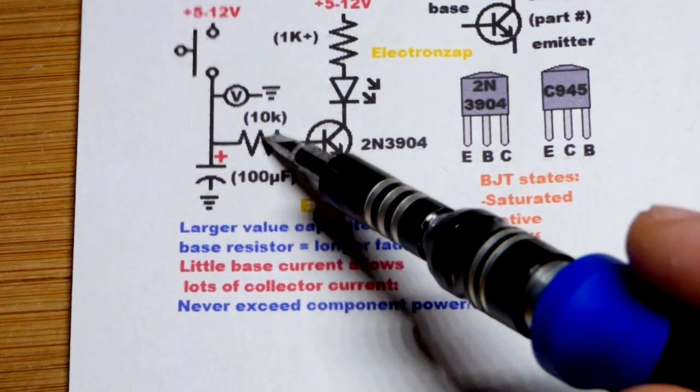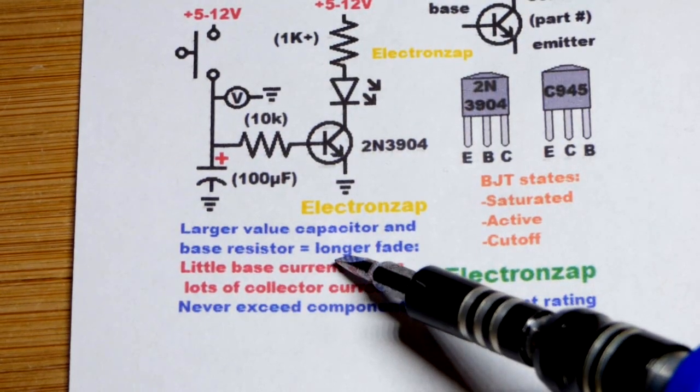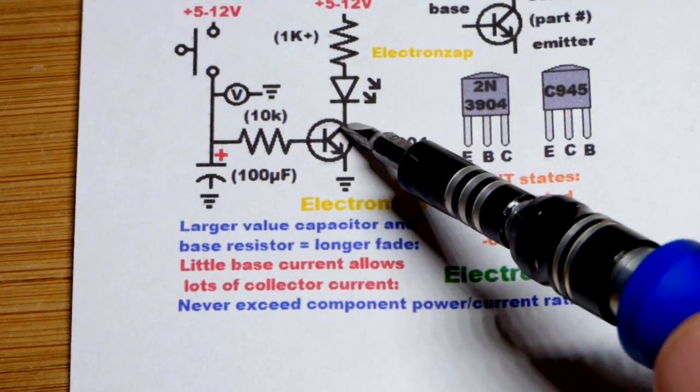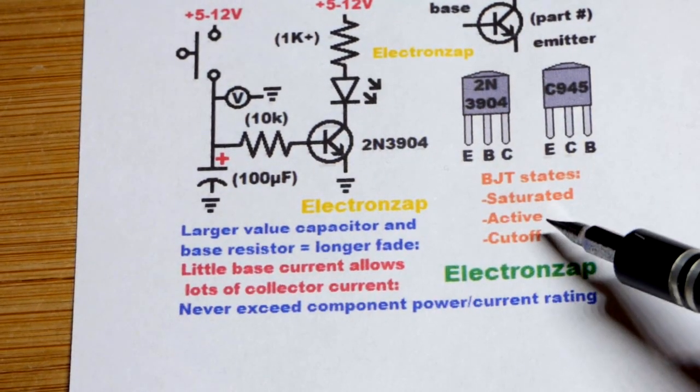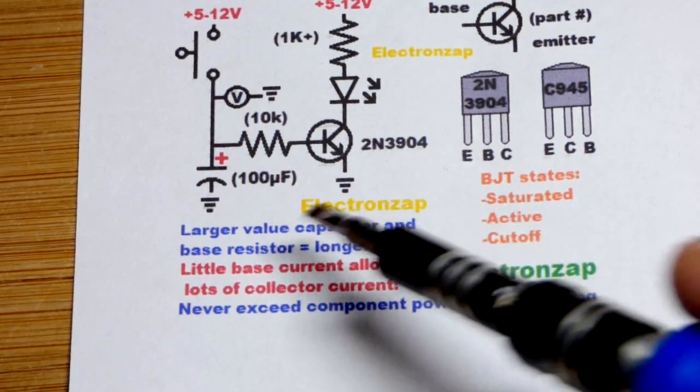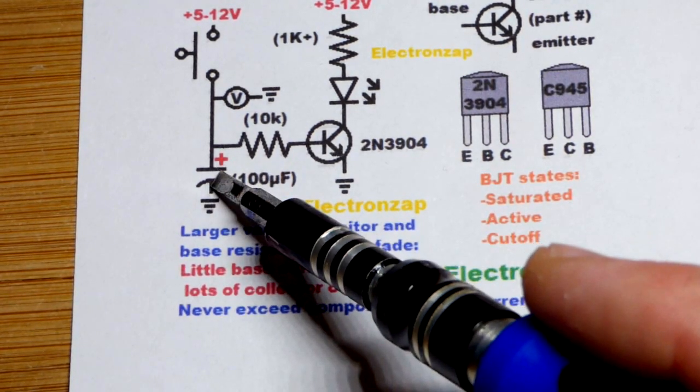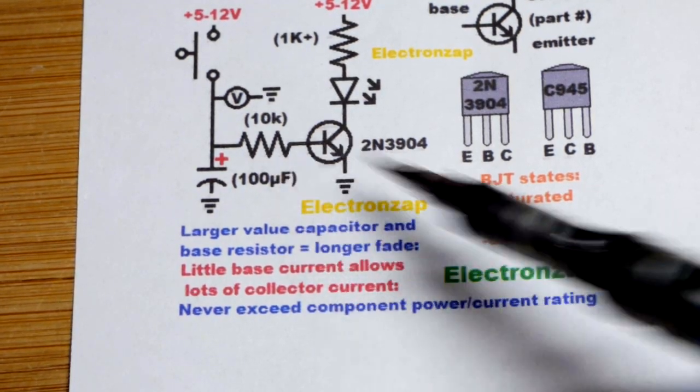So in any case, if we use larger values for one or both of these, then it's going to take longer for the transistor to start slowing down, how much current goes through it, slow down its fade, because we got either more charge and/or it's letting less of those charges go through right there.